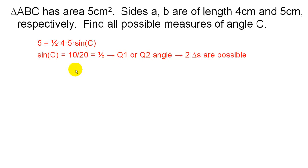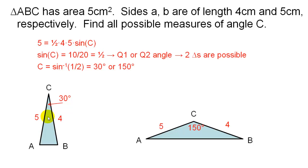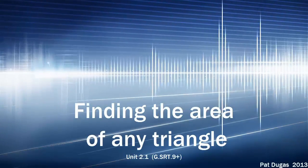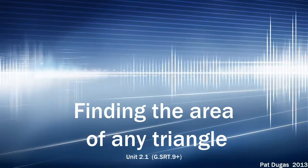You get those by using the inverse sine. The inverse sine will only return one of those angles, but you must recognize that two possible angles can have a sine of one-half. That creates two possible triangles: an acute triangle with angle C of 30 degrees and sides of four and five, or an obtuse triangle with angle C of 150 degrees, also with sides of four and five. Now you know how to find the area of any triangle by knowing one of the angles and its two included sides.